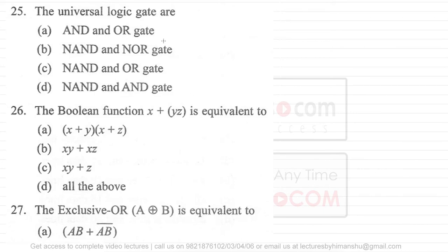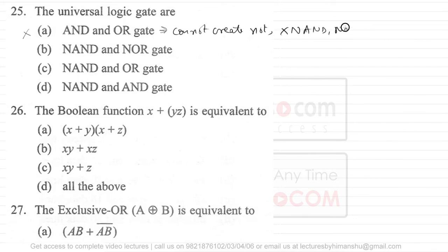Question 25 asks about universal logic gates — gates with which you can create every other gate combination. AND and OR are not universal gates because with them you cannot create NOT, and therefore cannot create NAND or NOR. NAND and NOR are universal gates because you can represent every other gate using combinations of NAND alone or NOR alone.